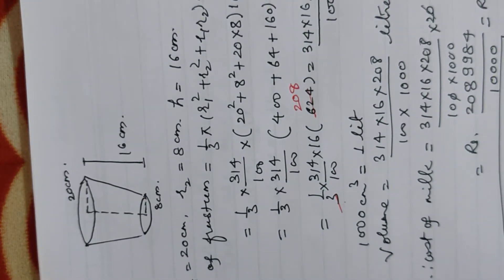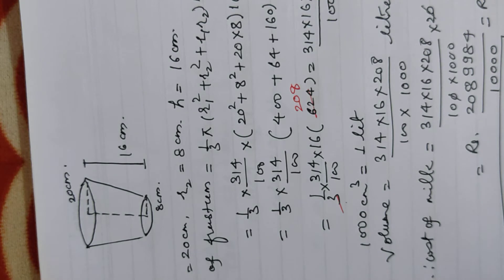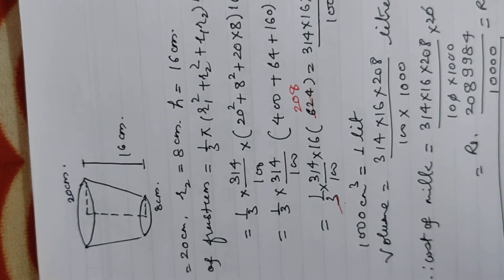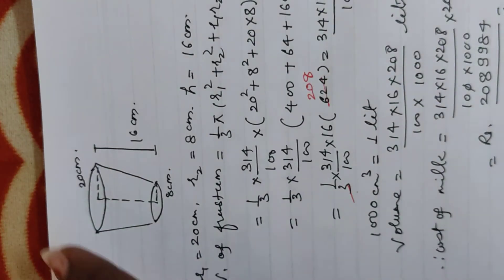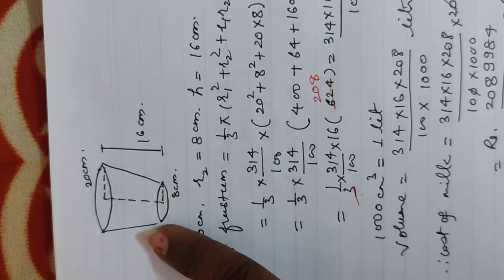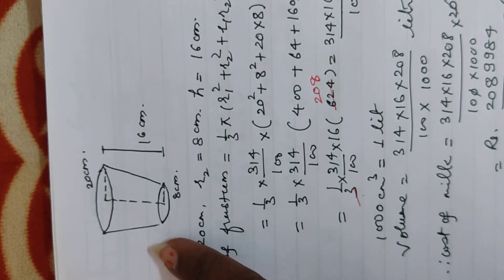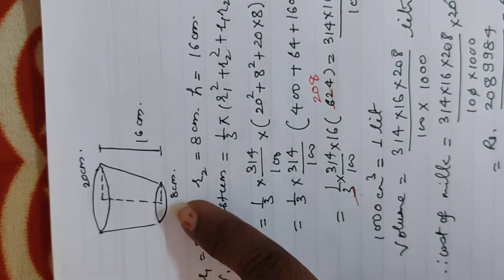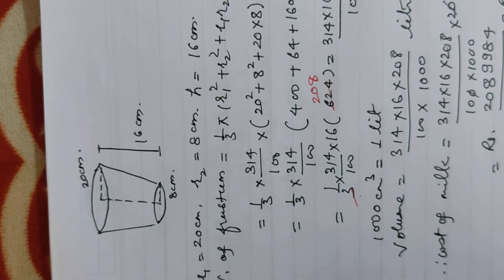Now we also need to find the cost of metal sheet used to make the container at Rs. 8 per 100 cm². To make the container we need the curved surface area plus the base area. First, we need the slant height L, since the formula for CSA requires it.